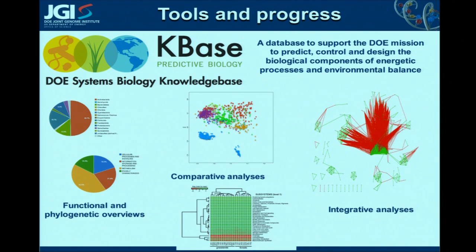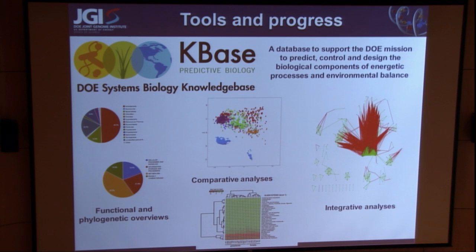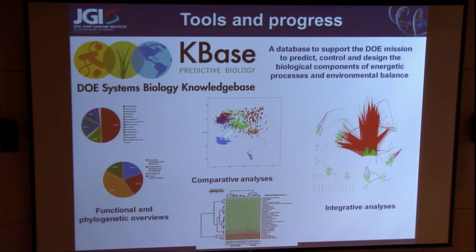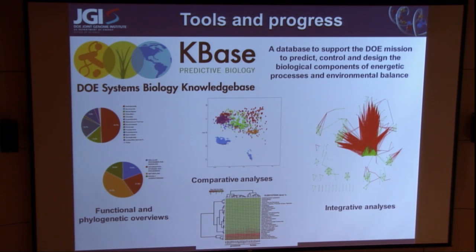There are also tools emerging for these kinds of functional-level analyses, particularly a system being built by the Department of Energy called the Systems Biology Knowledge Base. They have a microbial communities division, and they're rapidly incorporating tools for functional analysis of metagenome data — overviews, heat maps, ordination plots, etc. I think this is a really promising forum, and one that we're trying to feed tools into for microbial community analysis within the DOE.